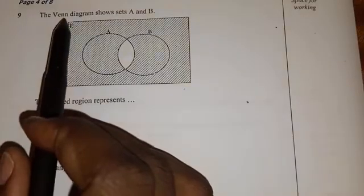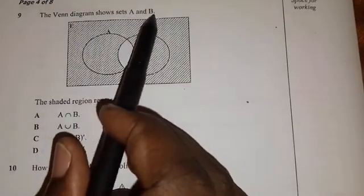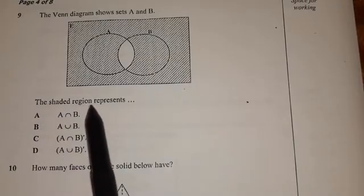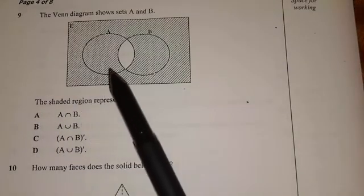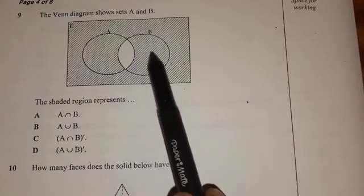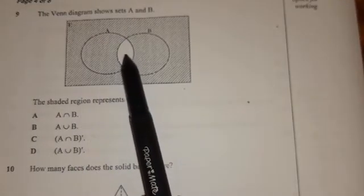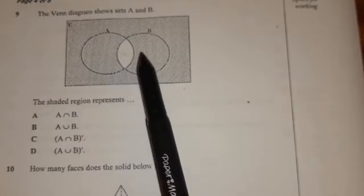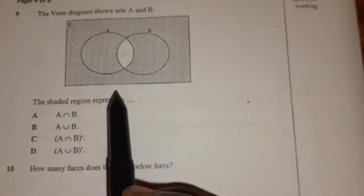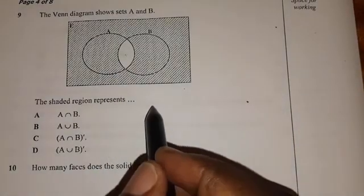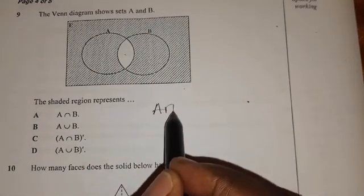Number nine, the Venn diagram shows set A and B, so we have set A and set B. The shaded region represents, so you can see that they have shaded everywhere except for the intersection of A and B. So meaning, the unshaded part here is A intersect B.